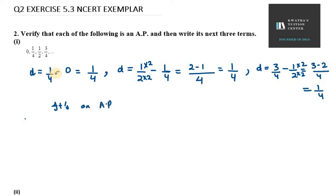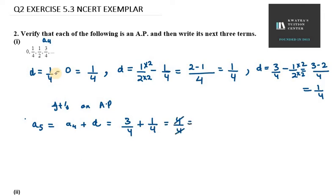We know the difference and we know the fourth term is 3/4. Now we need to find A5. A5 will be A4 plus D — add the difference into it. A4 is 3/4 plus the difference 1/4, so it will be 4/4, which cancels to give us 1.